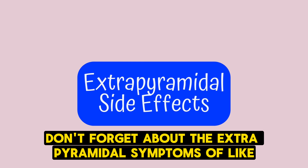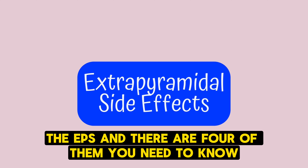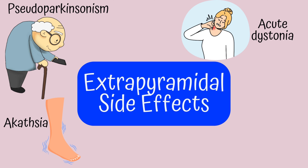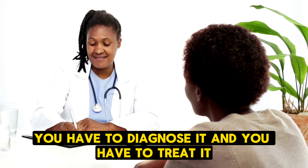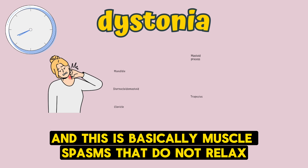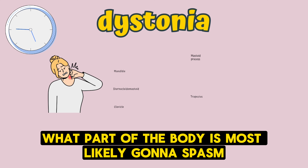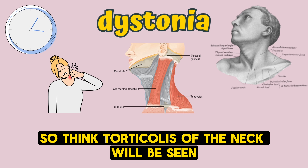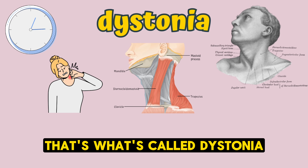Don't forget extrapyramidal symptoms (EPS) — there are four: dystonia, akathisia, parkinsonism, and tardive dyskinesia. Dystonia happens within hours — muscle spasms that do not relax. The most likely body part is the sternocleidomastoid muscle, so torticollis will be seen. Treatment for EPS starts with Bs: diphenhydramine (Benadryl) or benztropine to treat dystonia.